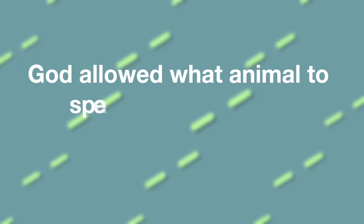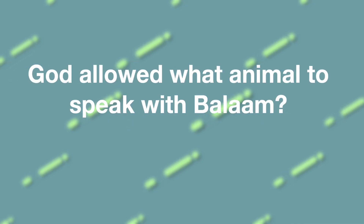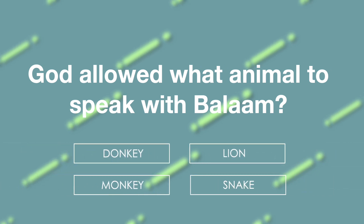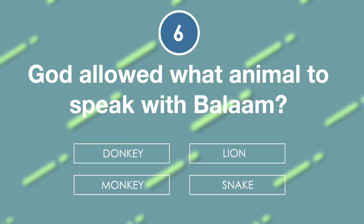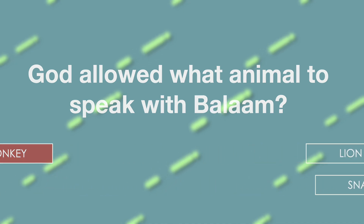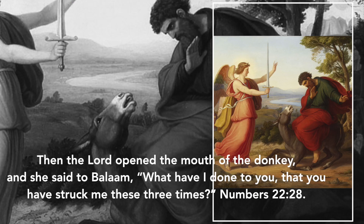God allowed what animal to speak with Balaam? Is it donkey, lion, monkey, or snake? The answer is donkey. 'Then the Lord opened the mouth of the donkey, and she said to Balaam, What have I done to you, that you have struck me these three times?' Numbers chapter 22 verse 28.